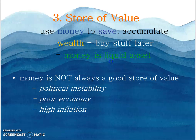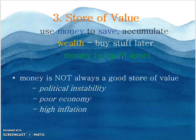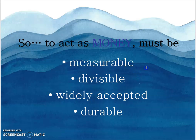The third function is store of value. Money is used to save, accumulate wealth, and buy things later. Money is a liquid asset. When you save money, you accumulate wealth and can buy goods or services in the future — for example, a house or a car. However, money is not always a good store of value because of political instability, poor economy, and high inflation. These three situations can destroy the value of money. To act as money, it must be measurable, divisible, widely accepted, and durable.